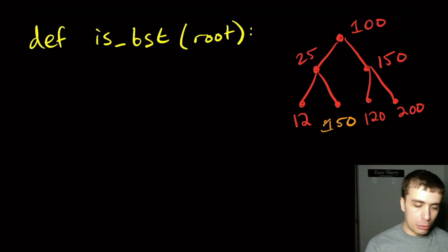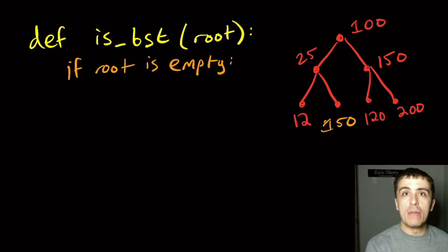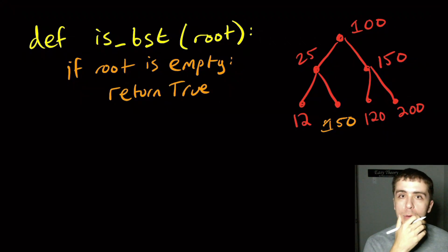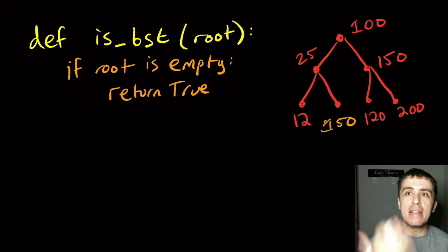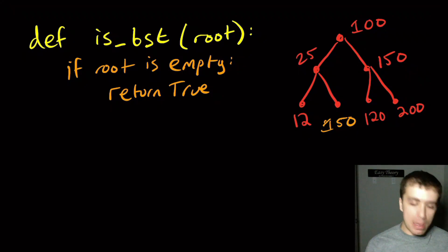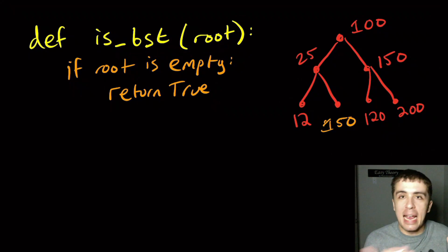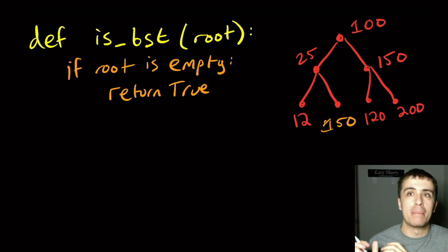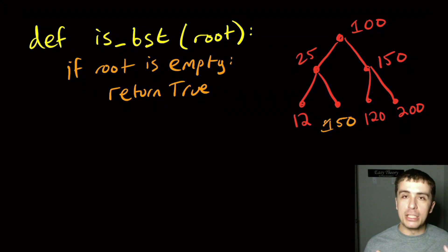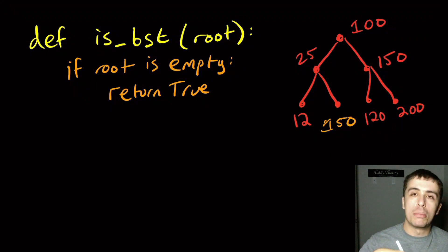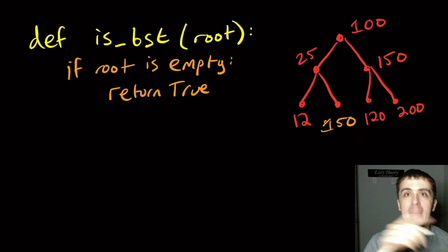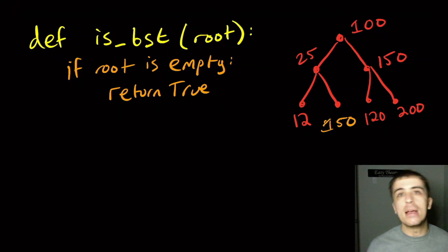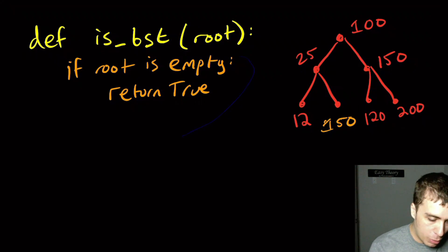If the root is empty we return true. But we need some way of filtering down information about the root's actual value. This function is just taking a binary tree without any parameters about the lowest or highest value that can appear on each side. So we need to either augment this function with two additional parameters for the maximum and minimum, or have this function call a different function — and that's what we're going to do.